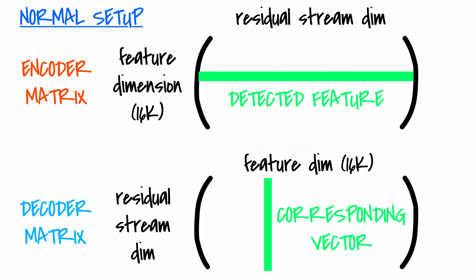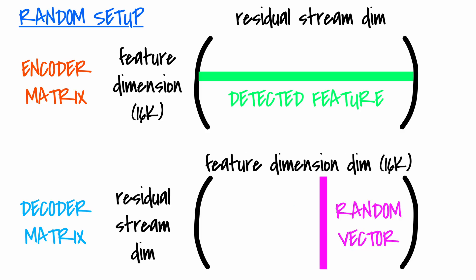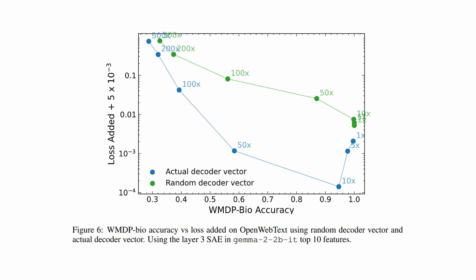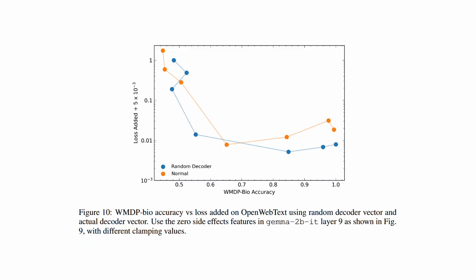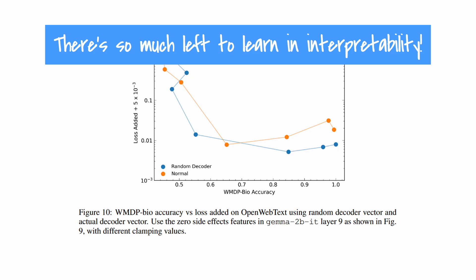They test this by selecting a random decoder vector for each of the biology-related features. Each time one of the biology features is activated, the random vector is projected into the Gemma 2 residual stream instead of the original vector matching the feature they want to remove. This figure on Gemma 2 shows that projecting a random vector instead of the targeted one degrades performance on unlearning. However, when they ran this same experiment on Gemma 1, this effect was contradicted, and random decoder vectors performed comparably to the targeted ones. The fact that such a different effect was observed for different models and SAE locations tells us there's still a lot to learn about the interpretability of these models.